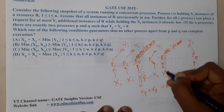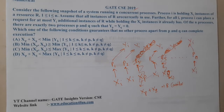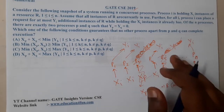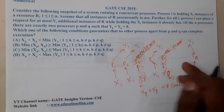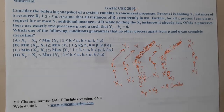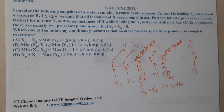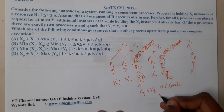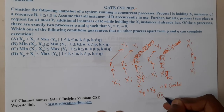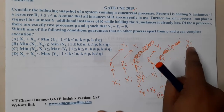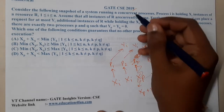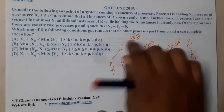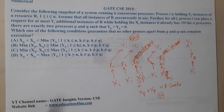Once p and q finish execution, xp + xq number of resources become available. Now, the question asks: what condition guarantees that no other process — p1, p2, p4, ..., pn — can execute even after these resources are released? To ensure no other process executes, their resource requirement should be greater than or equal to the total available resources plus one. If we have 10 resources available, their requirement must be at least 11.